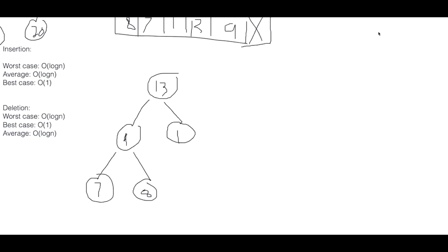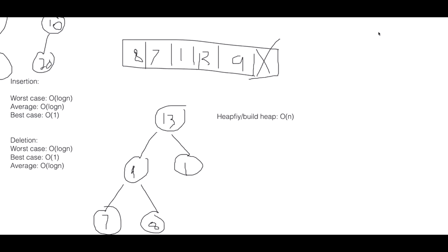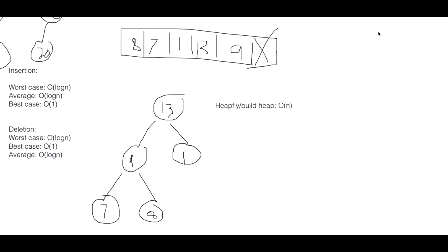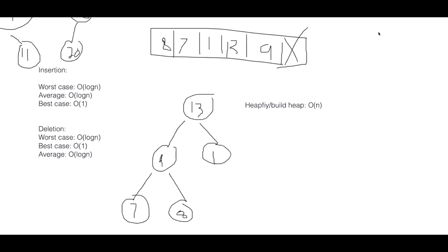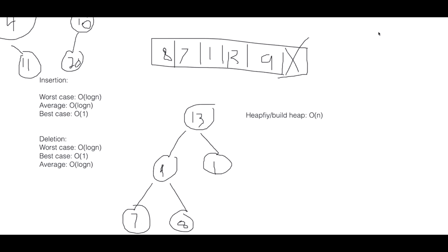Heap sort is another thing to know. If we have an array of unsorted elements, we put them all into a heap and then take out the top element at a time, updating the heap after every iteration so it remains valid. We take the next highest element, then the next, and so on. At the end, our biggest element goes into the first slot of our sorted array, then nine, and so on. This is one of many sorting algorithms we'll cover.